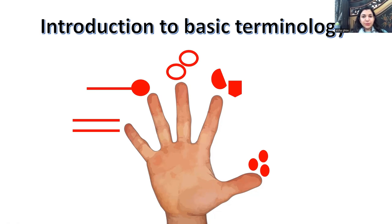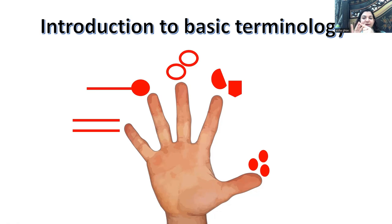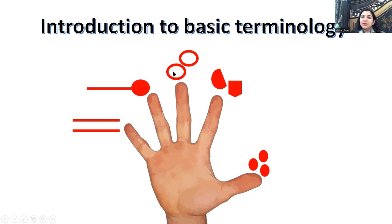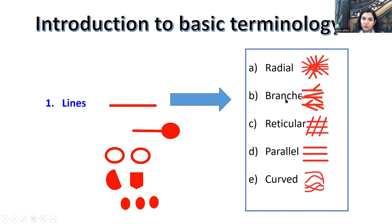The five basic structures in dermoscopy are the foundation of everything. I made a hand diagram to memorize them. Starting from the little finger: lines, pseudopods, circles, clods, and dots. These are the five basic structures upon which all of dermoscopy builds.